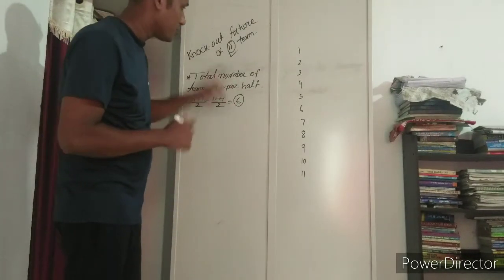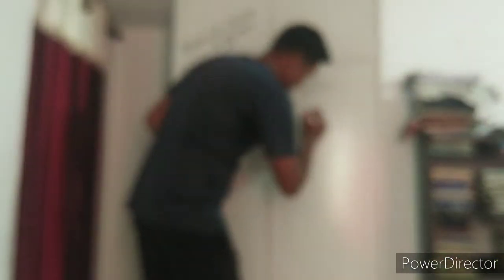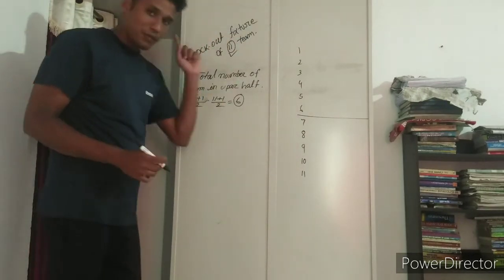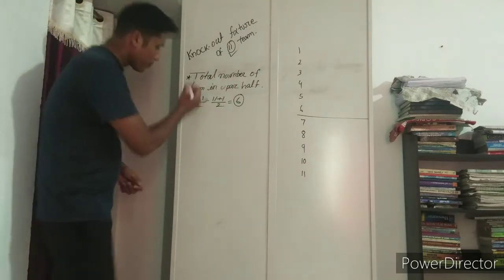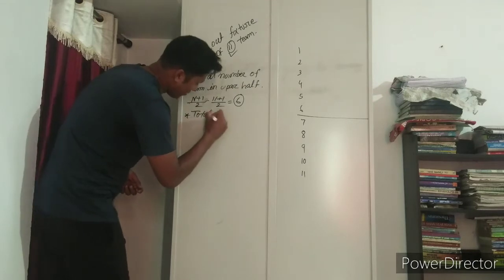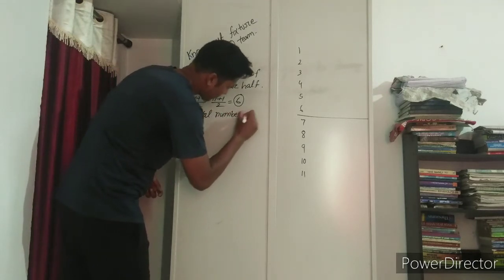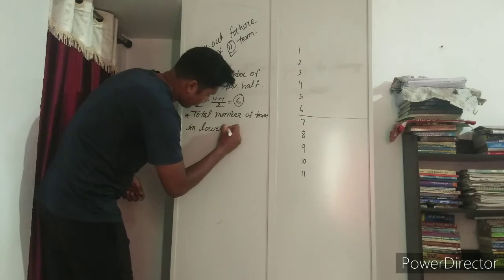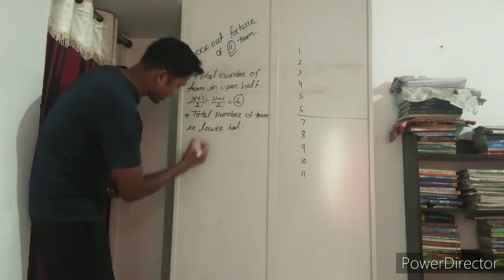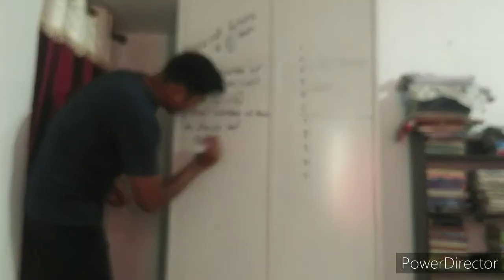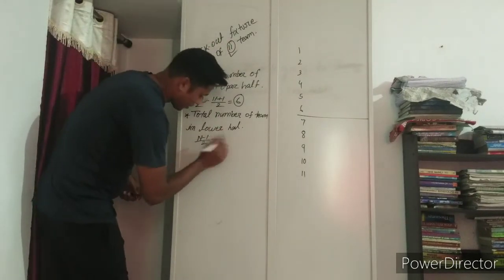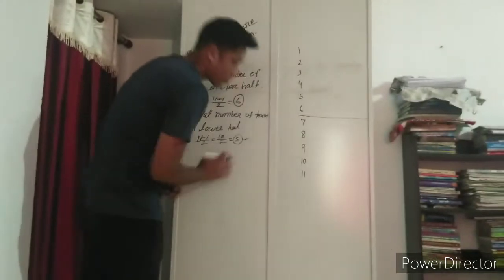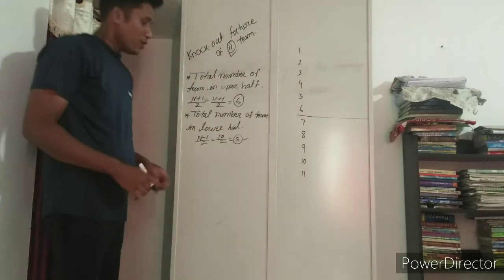In the lower half we got 5 teams: one, two, three, four, five. The simple formula for the number of teams in the lower half is: n minus 1 divided by 2. So eleven minus 1 is 10, divided by 2 is 5. So the lower half has 5 teams. This is the easy formula to find out the upper half and the lower half.